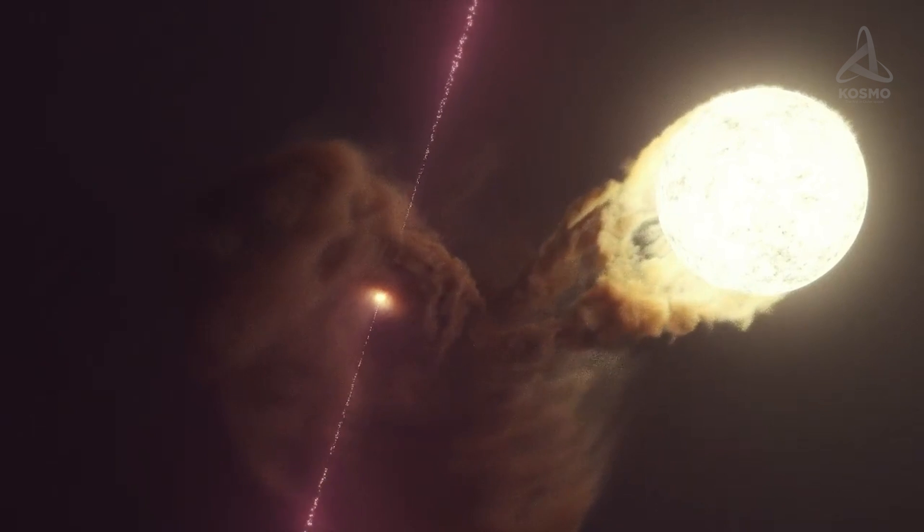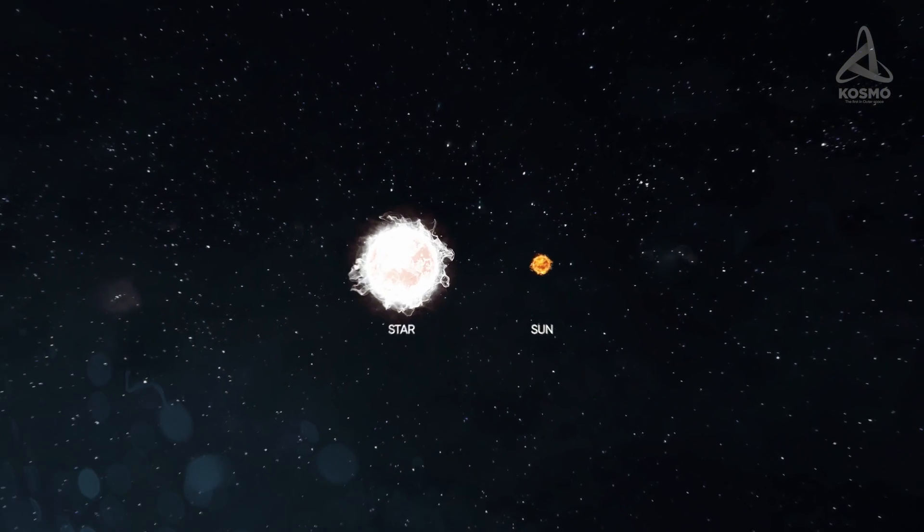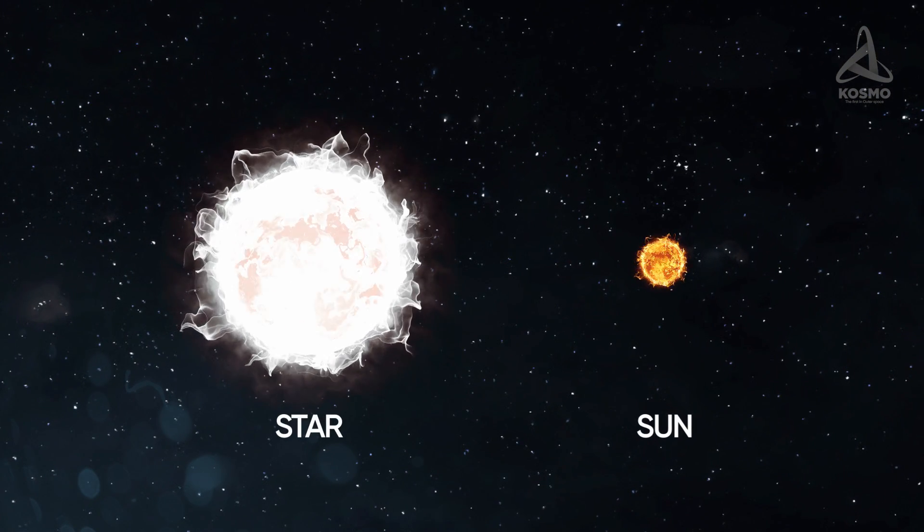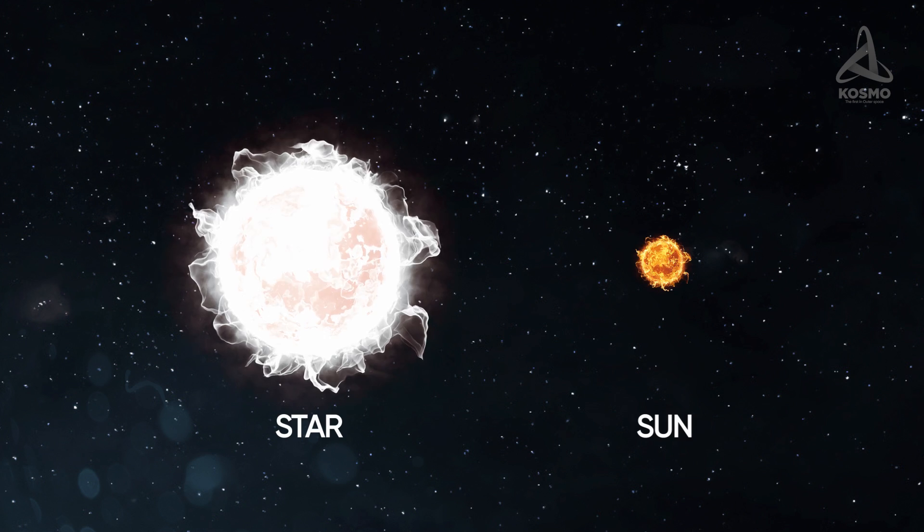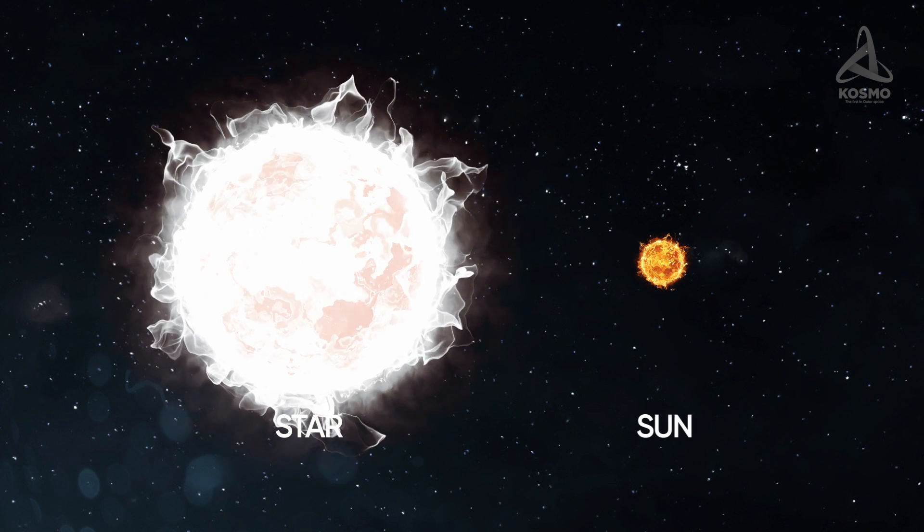That is, a main sequence dwarf star of a whitish hue. It is assumed that this star's mass is 10 to 30 times that of our Sun. And more likely than not, the dwarf used to be considerably heavier in the earlier stages of its existence.